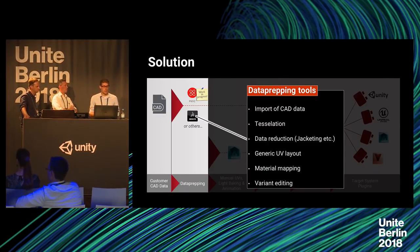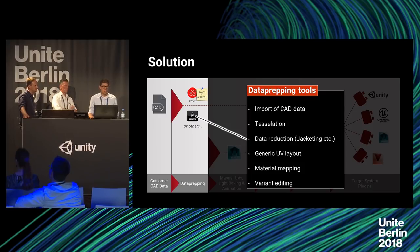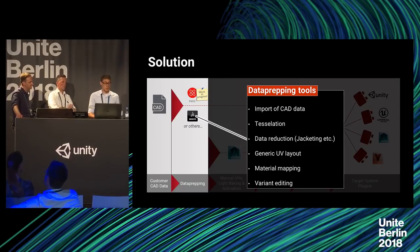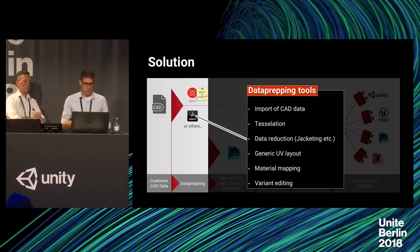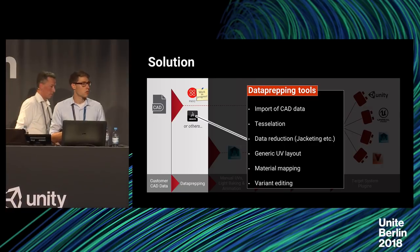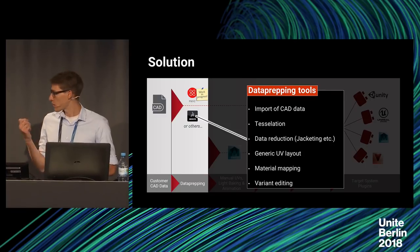Currently, we do a lot of manual setup to clean up data, tessellate it, and reduce it — and that's where Pixies comes in. We're evaluating how well we can use it in our process, and because of the Python scripting API Pixies provides, we can automate a lot of things we currently do manually. A key step is doing a generic UV layout, which is something Pixies is good at, as Henning mentioned.